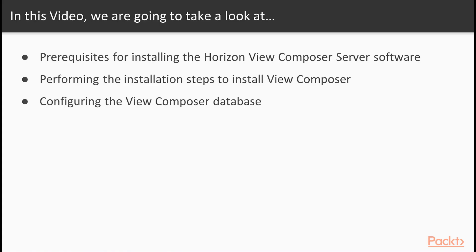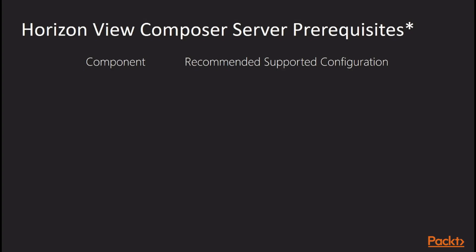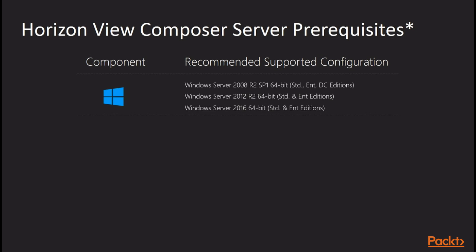In this video, we're going to install the Horizon View Composer server, along with configuring the associated View Composer database. Before we do, there are just a couple of prerequisites that you need to make sure you have in place first. These are around the configuration requirements of the Composer server itself. The View Composer server needs to be built with the following requirements. We need to be running Windows Server 2008, 2012 or 2016 as our operating system.